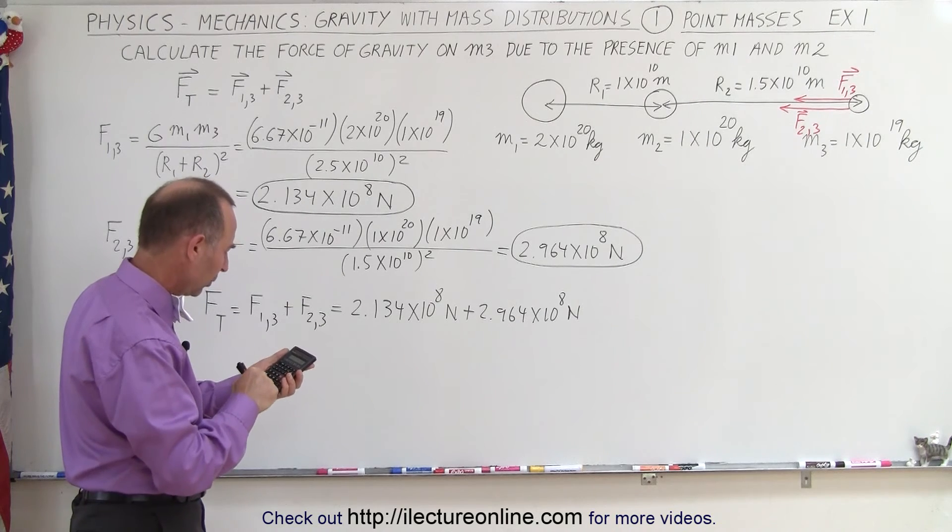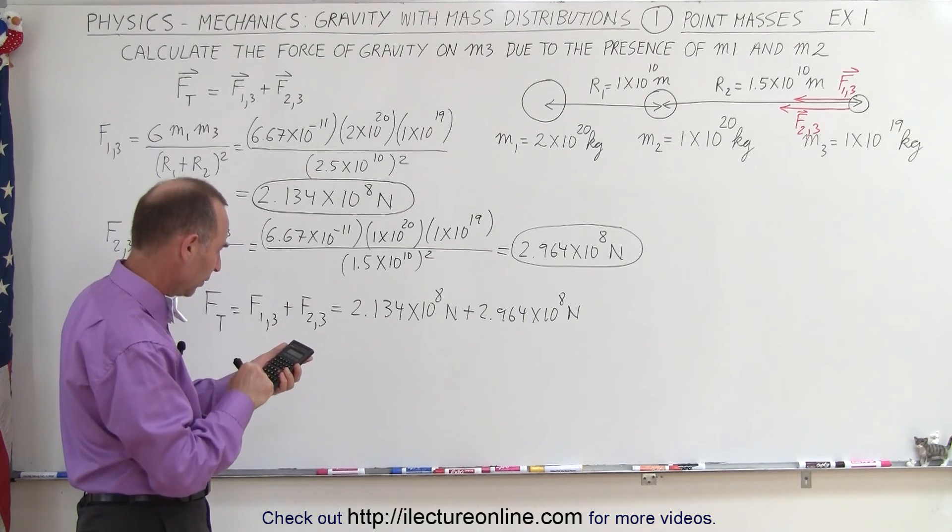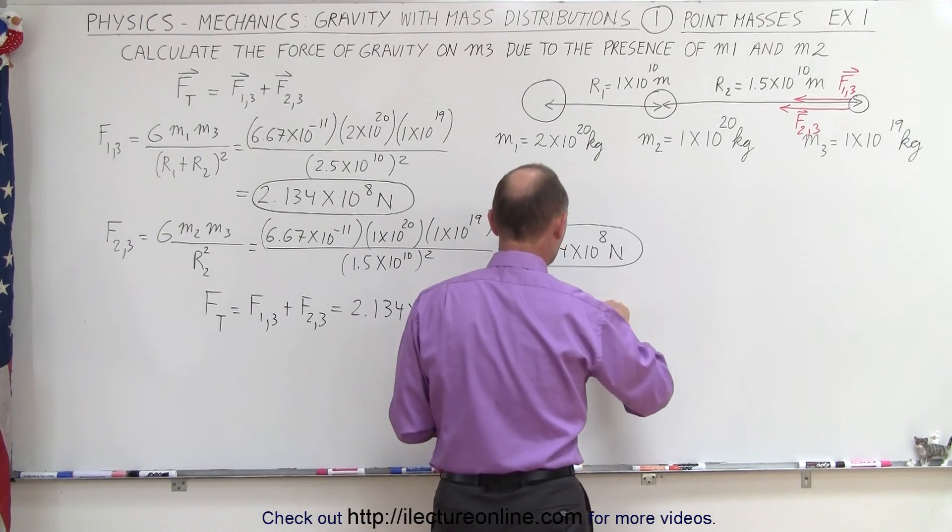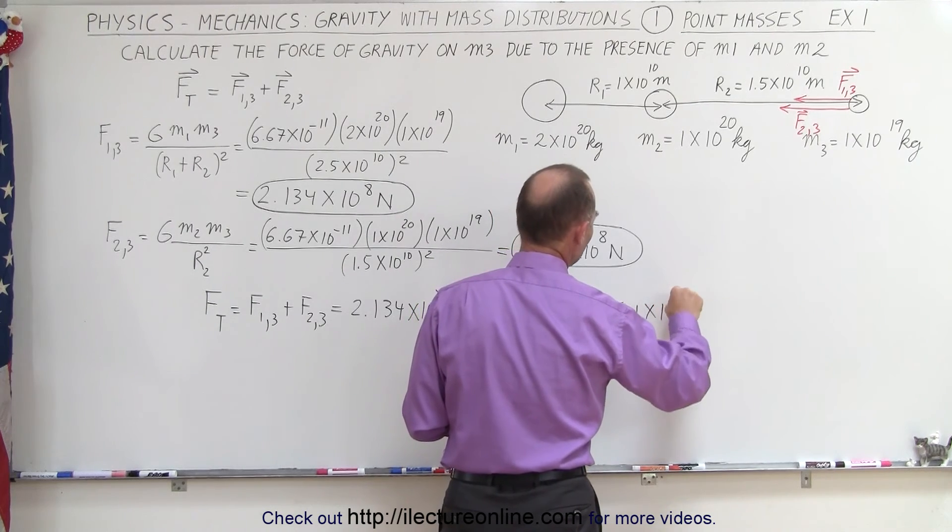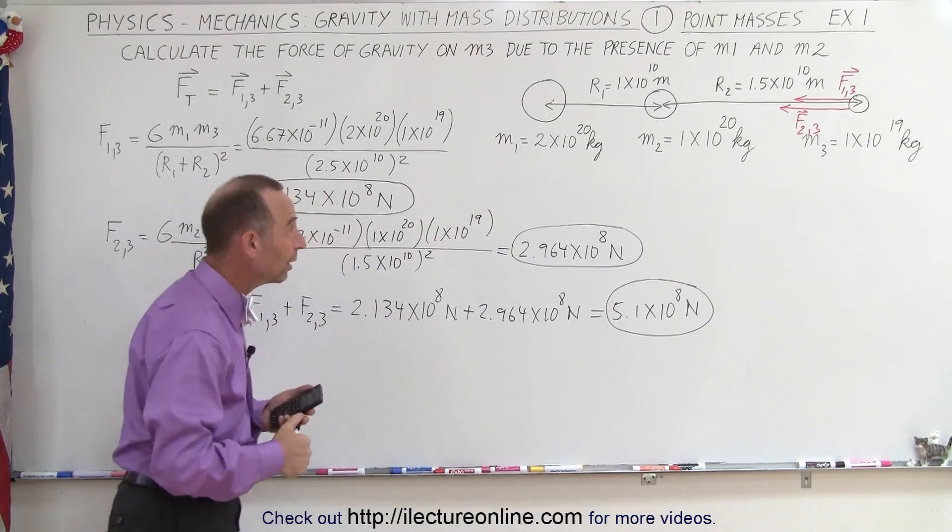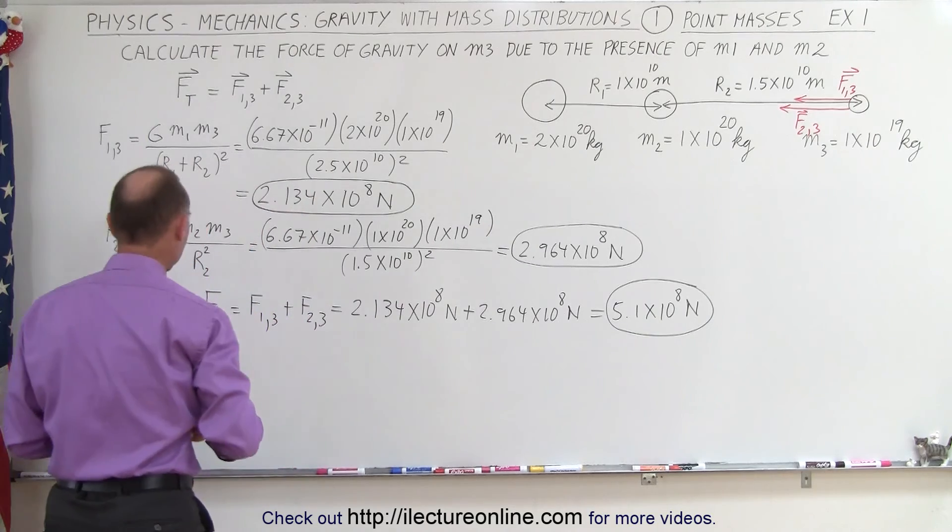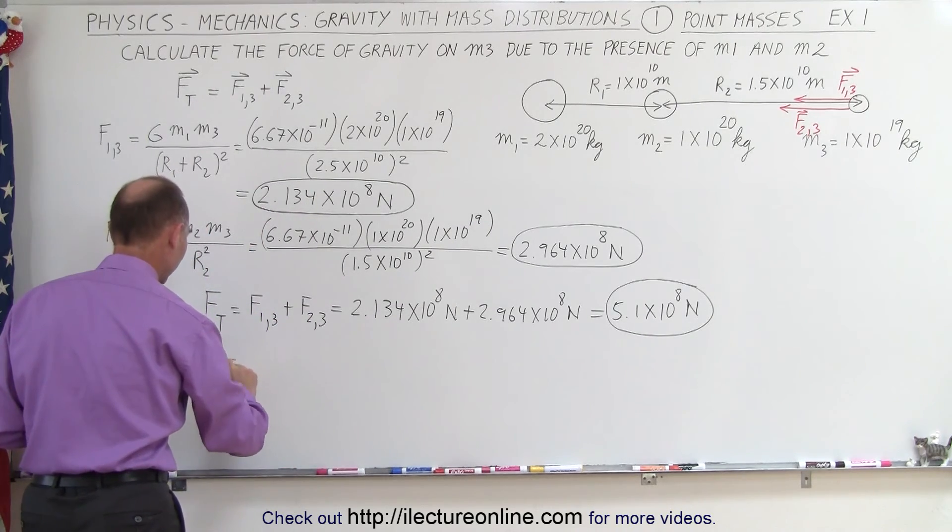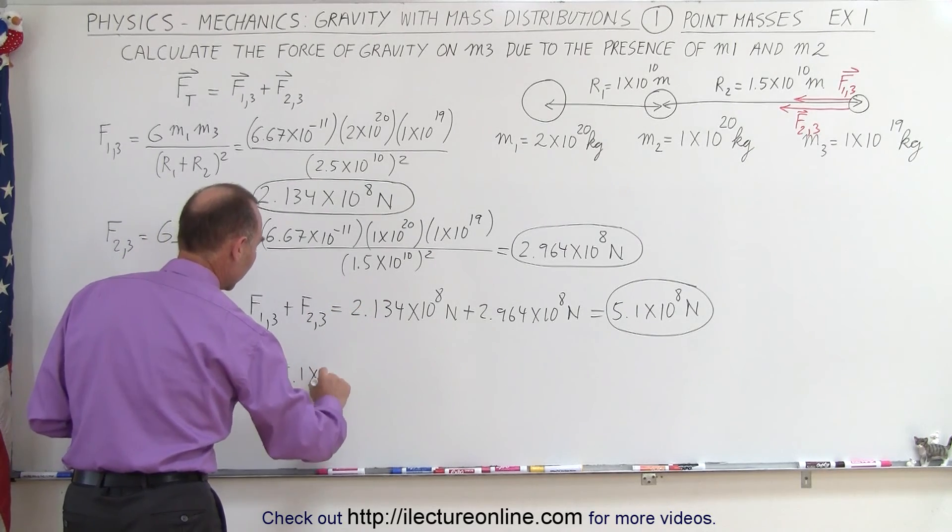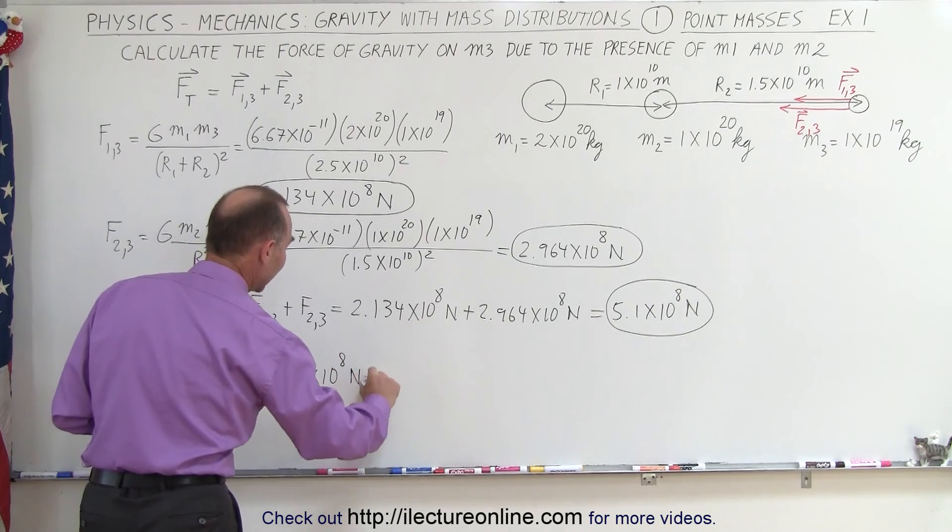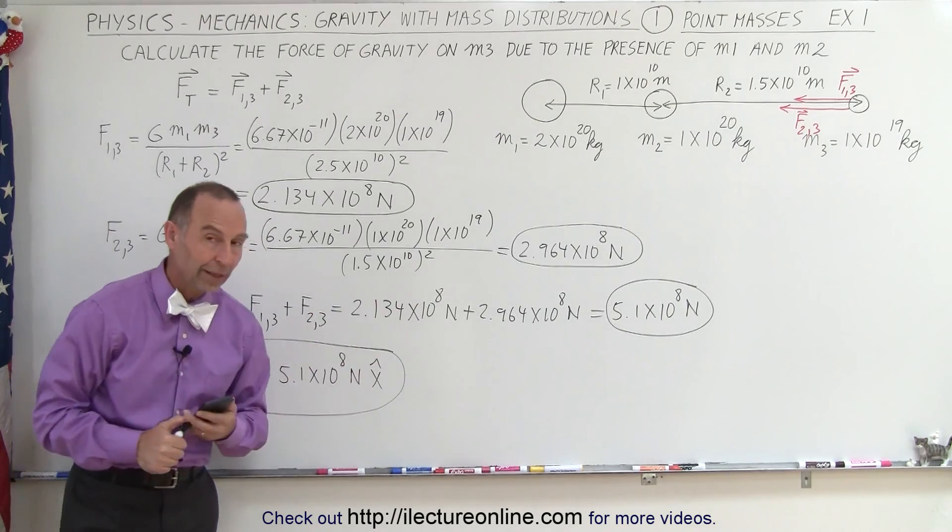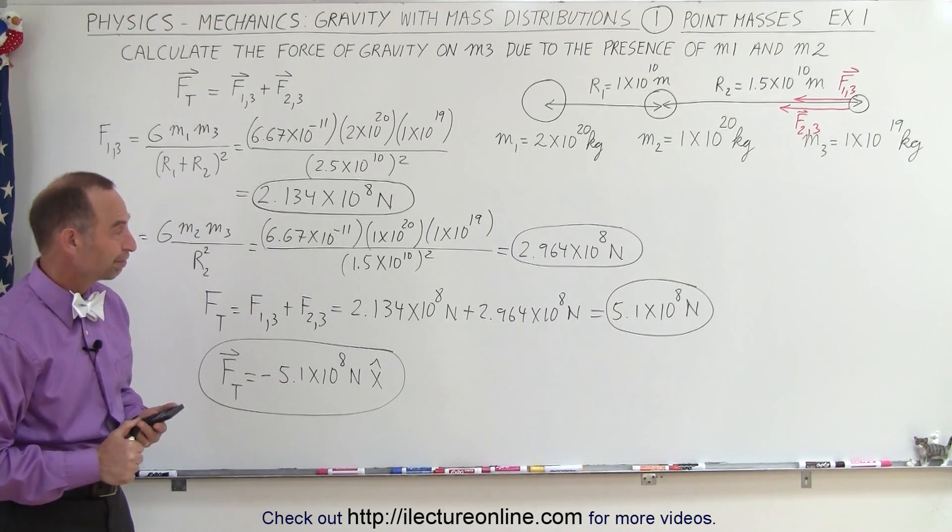So what that's equal to: 2.964 plus 2.134, and I'm rounding it off, let's just write as 5.1 times 10 to the 8 newtons. So that's the magnitude of the force. Now if we want to write that as a vector quantity, and realizing that it's pointing to the left, we can then say that f total as a vector is going to be equal to minus 5.1 times 10 to the 8 newtons in the x direction. So this is how we would write it as a vector quantity, and that's how we would write it simply as the magnitude of the solution. And that's how it's done.